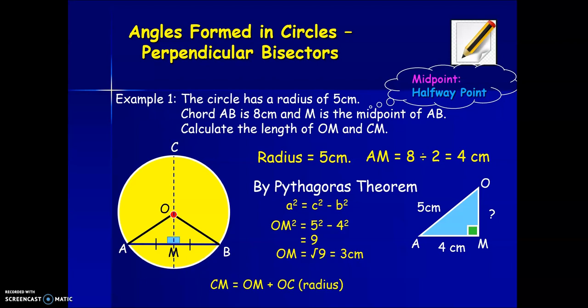Now, if we look at CM, CM is equal to the distance OM plus OC. But OC is a radius because it goes from the center to a point in the circumference. So therefore, it's three plus five, which is equal to eight centimeters.